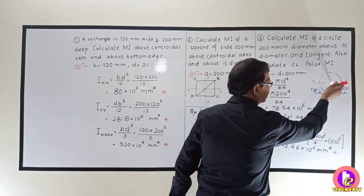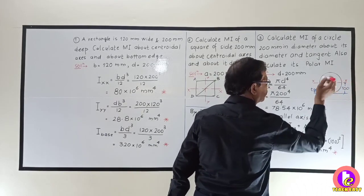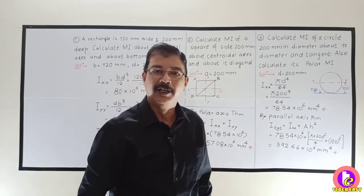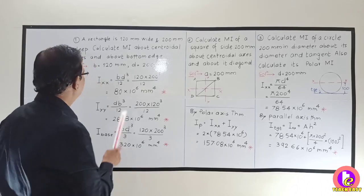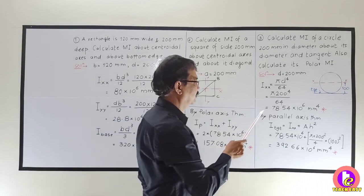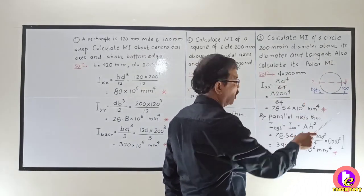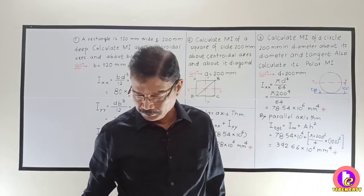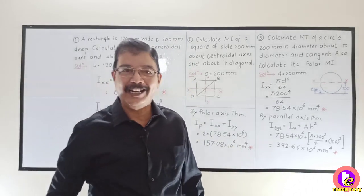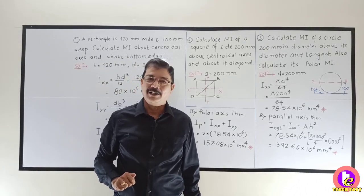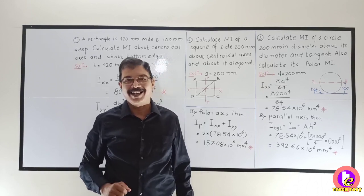So in this particular lecture we have solved three problems: the first was on a rectangle, the second on a square, and the third on a circle. Please practice these. In the next lecture we will solve some problems on hollow sections. Thank you.